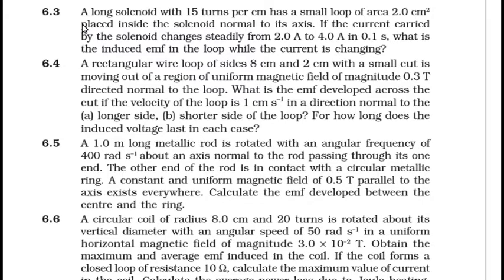Let us see problem number 6.3. A long solenoid with 15 turns per centimeter has a small loop of area 0.2 cm² placed inside the solenoid normal to its axis. If the current carried by the solenoid changes steadily from 2 ampere to 4 ampere in 0.1 seconds, what is the induced EMF in the loop while the current is changing?